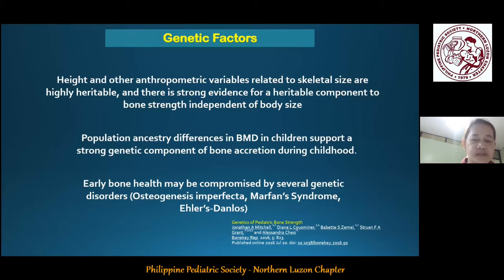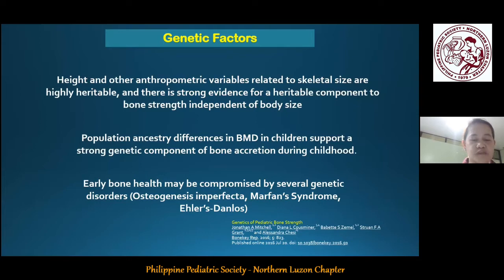Osteogenesis imperfecta is the best example of these disorders, with a spectrum of problems that includes low bone mass, chronic bone pain, recurrent fractures, and skeletal deformity. As a pediatrician, I believe that identifying genetic factors that affect peak bone mass is a critical step in developing early and effective interventions for the prevention of osteoporosis or fractures that may happen later in life.